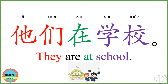他们在学校。 他们 means they. 在 means in or at. 学校 means school. 他们在学校 means they are at school. Now your turn.